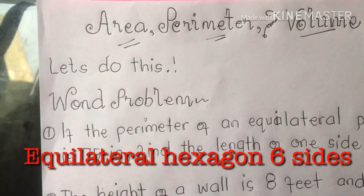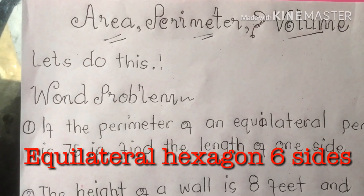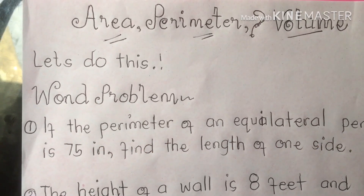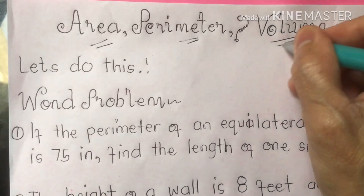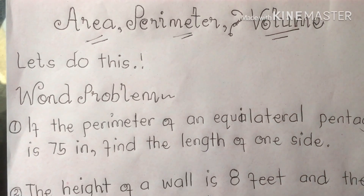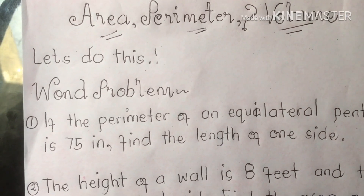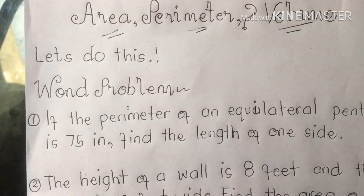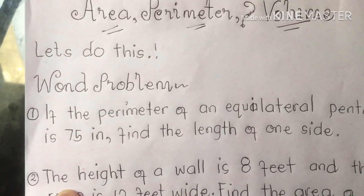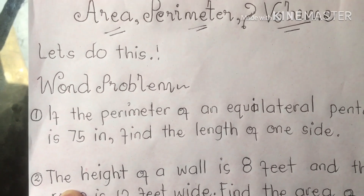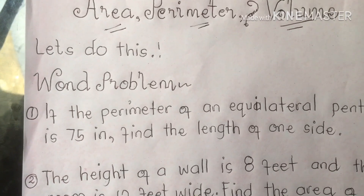For area, you find the length and width — how long and how wide it is. For volume, we're going to find the exact formula for getting the volume of a solid figure. Here we go, let's do this class.